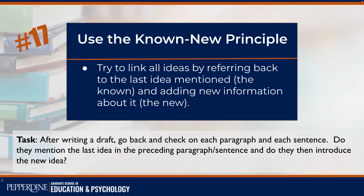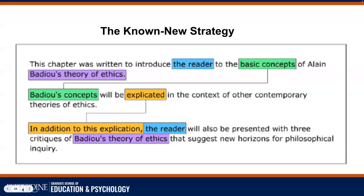The known-new principle involves linking all your ideas from sentence to sentence and paragraph to paragraph. You look at the last idea mentioned in the preceding sentence — that's the 'known' — mention it at the beginning of your new sentence, then add new information. In the next sentence, do the same thing, weaving back and then moving forward to achieve seamlessness and flow.